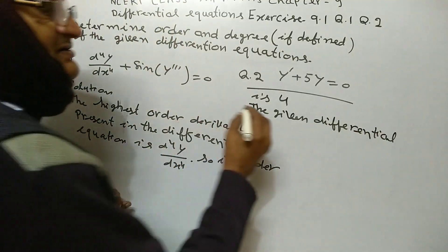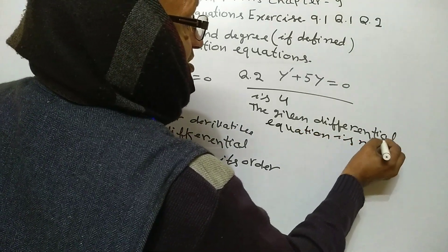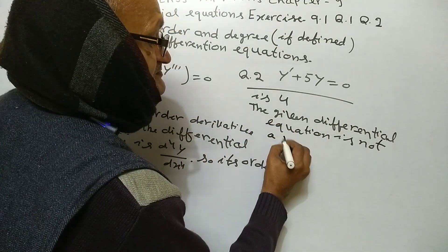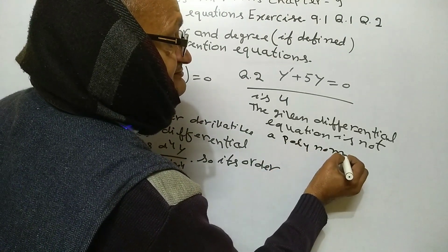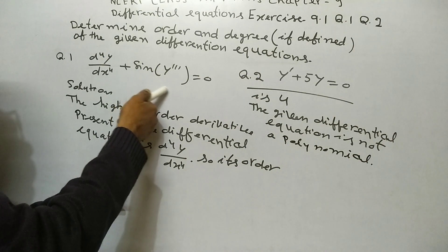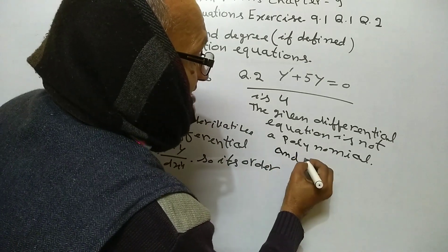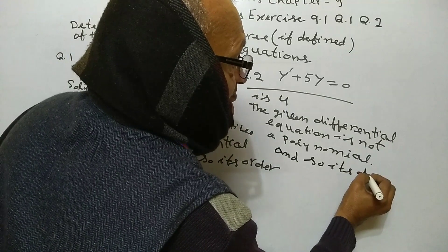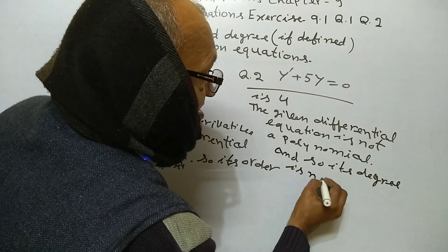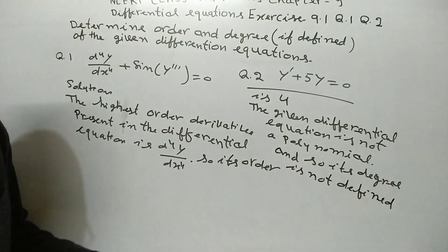The given differential equation is not a polynomial, as sine d3y upon dx3 does not belong to polynomial, and so its degree is not defined. Now question 2.